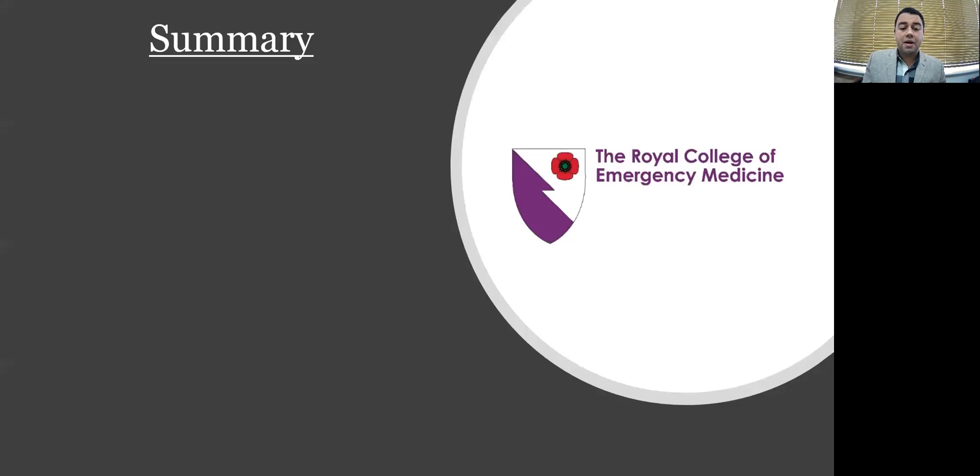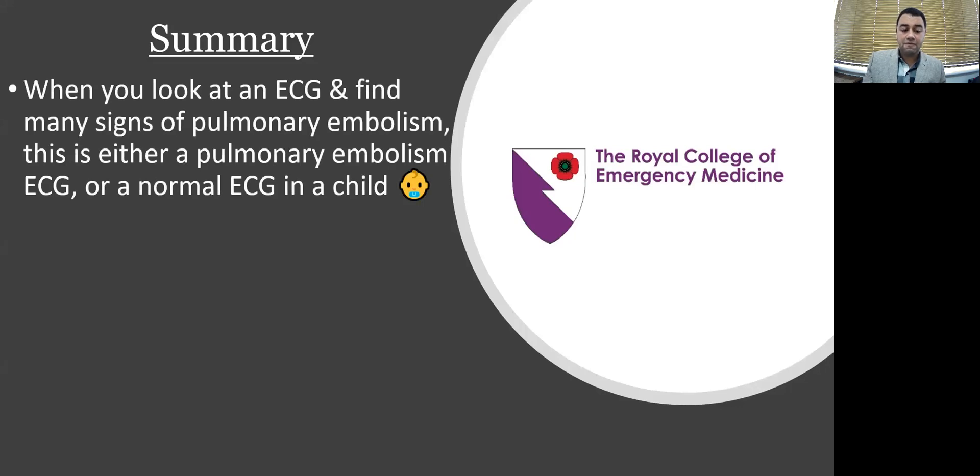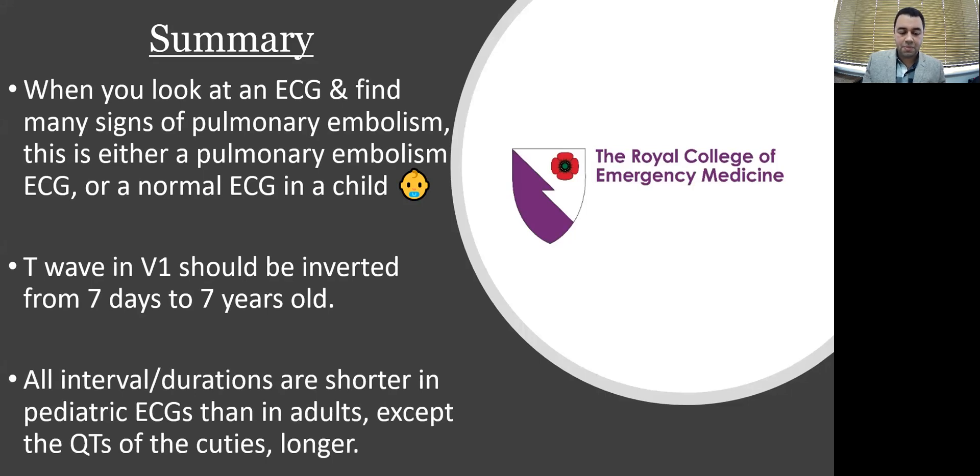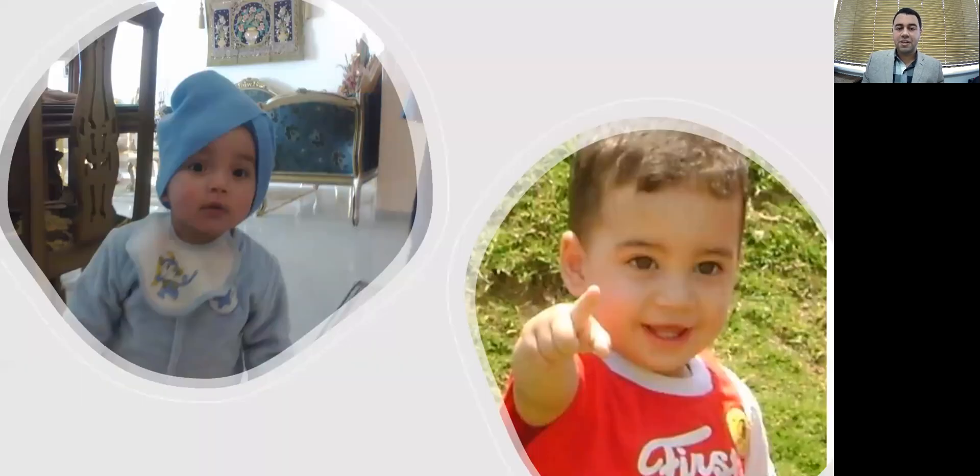So in summary, pediatric ECGs are the same as adults when it comes to the approach. When you look at an ECG and find signs of pulmonary embolism, this is either pulmonary embolism ECG, or a normal ECG if it is for a child. T waves in V1 should be inverted from seven days old to seven years old. And all intervals and durations are shorter in pediatric ECGs than in adults, except the cuties of the cuties. They are longer. Thank you very much for this. I'm just going to leave you with my two boys when they were cute. And I'm more than happy to get your questions when it comes to the QA session. Thank you.